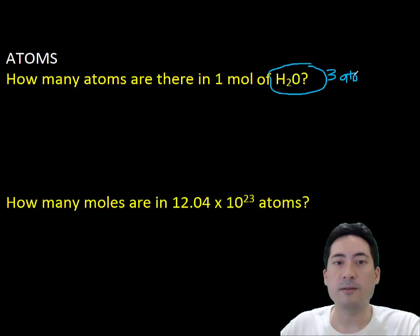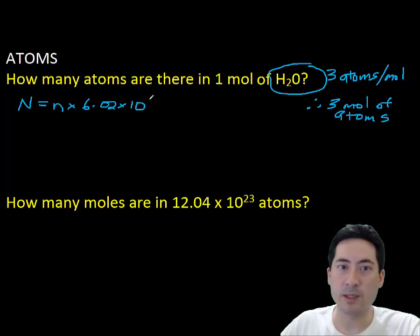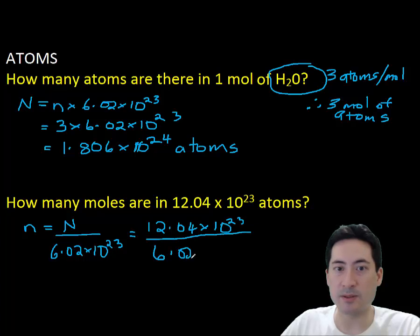So let's have a look at a few problems. Let's deal with atoms first. Here we have how many atoms are there in one mole of H2O. One mole of H2O, one molecule of H2O has three atoms, so that's three atoms per mole. So if that's the case, the number of particles will be the number of moles times the value of the mole itself. So using that formula there, we get to a value of 1.806 by 10 to the 24 atoms. In a similar way, how can we work out how many moles there are if you give it the number of particles? Divide that by 6.02 by 10 to the 23, and you get this value here as 2 moles.